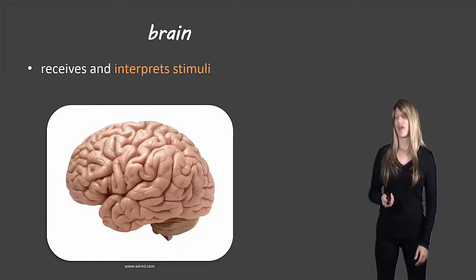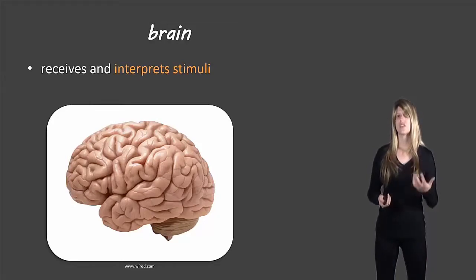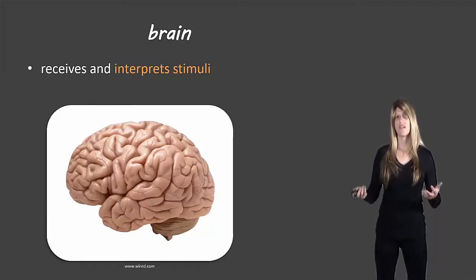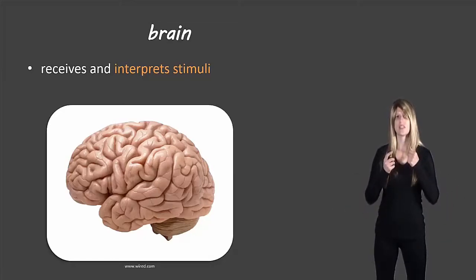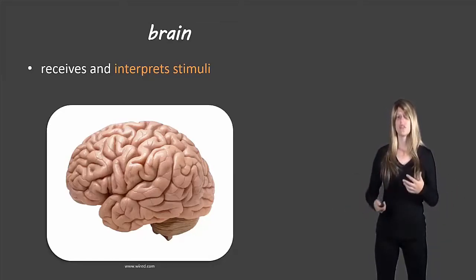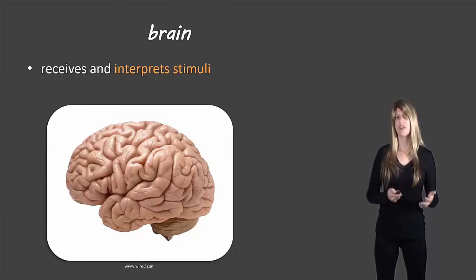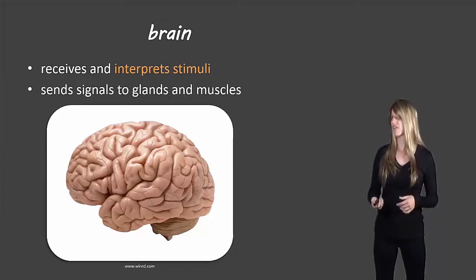So first of all, the brain — it receives and interprets stimuli. It's getting information from all the nerves in the body, and all of that information gets sent to the brain, which needs to interpret that stimuli to determine how the body needs to react.